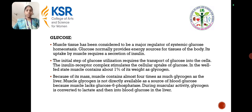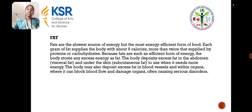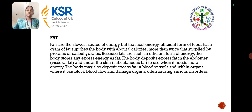Regarding fat, fats are the slowest source of energy but the most efficient. Each gram of fat supplies the body with about 9 kilocalories, as we are all familiar with. Because fat is such an efficient form of energy, the body stores any excess energy as fat. The body deposits excess fat in the abdomen and also under the skin to use whenever it is needed.